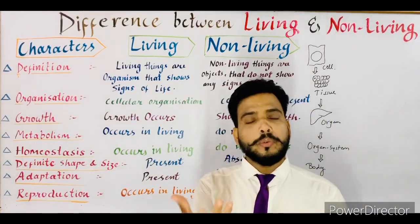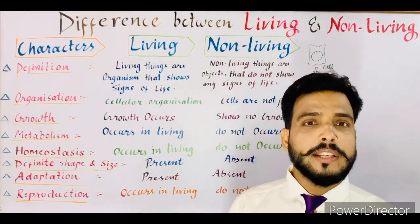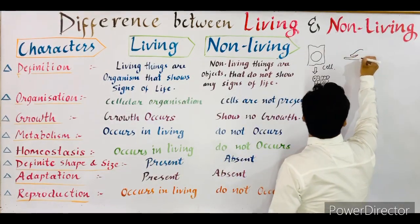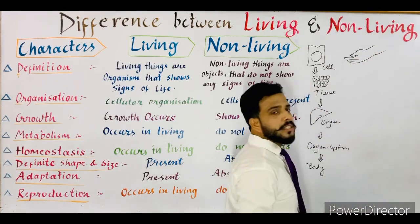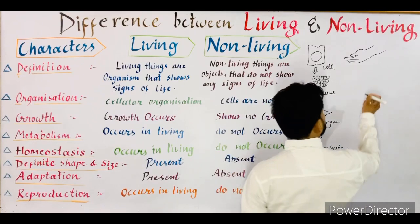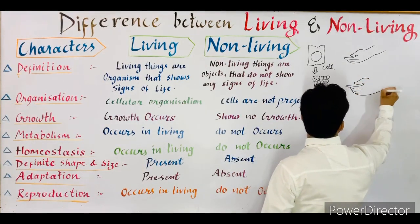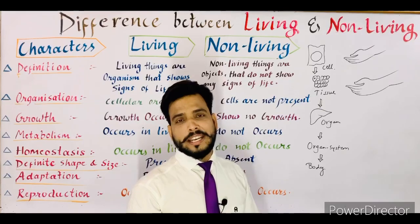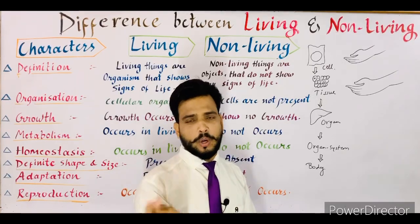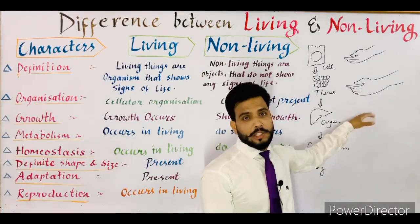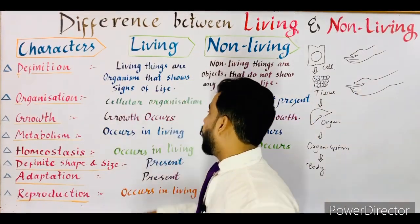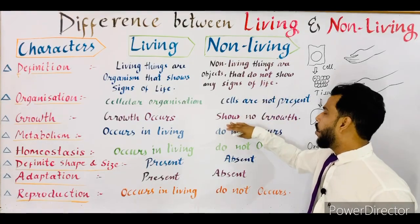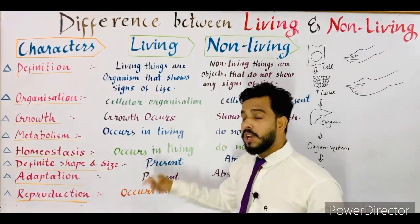The next point is growth. The increment of mass and size — that is, a permanent change — is known as growth. For example, when you were about four years old, your hand was much smaller, and now at 16 to 17 years old your hand is larger. That is growth: a permanent change in the size of an organism or any body part. It is not reversible. Growth occurs only in living beings while it does not occur in non-living things.